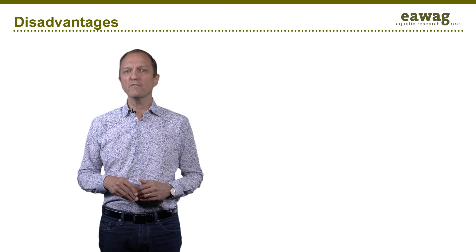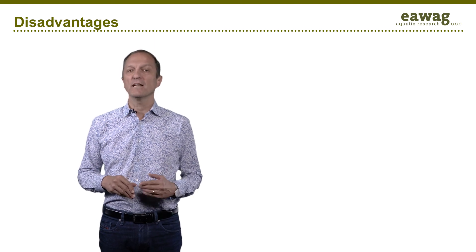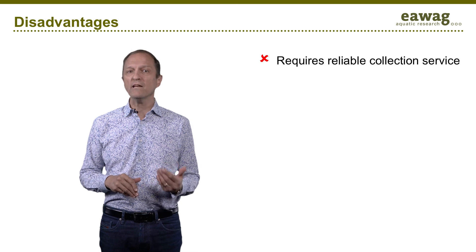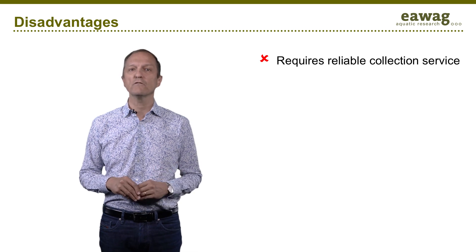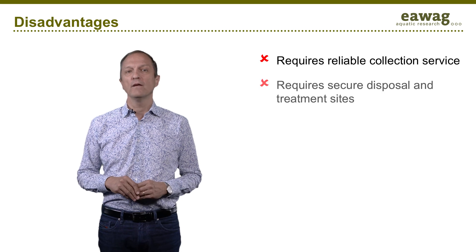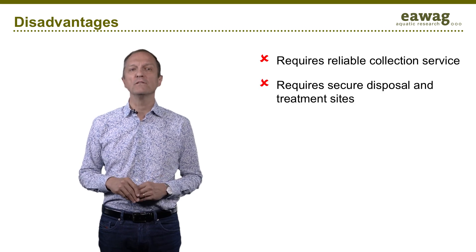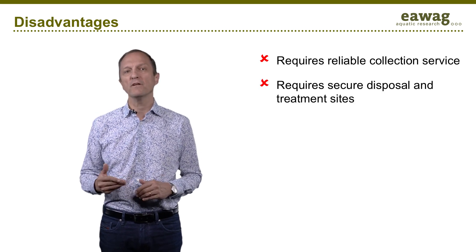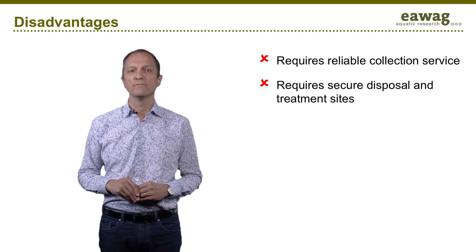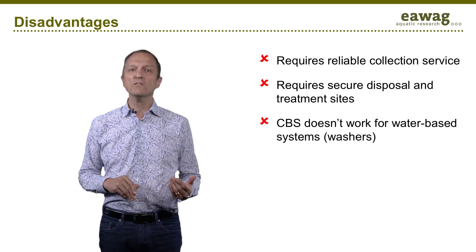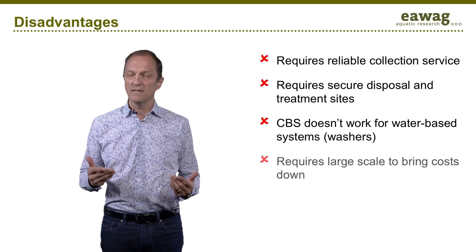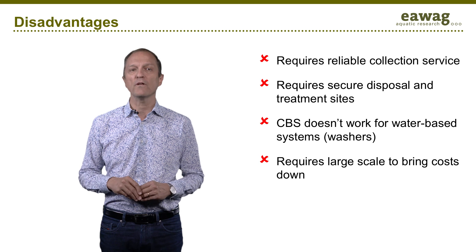Some disadvantages include that CBS systems require a well-established regular collection service at least once or twice weekly. They require secure disposal and treatment sites that are different from decentralized wastewater systems. CBS does not work for water-based systems for washers, and scale matters to bring down the costs.